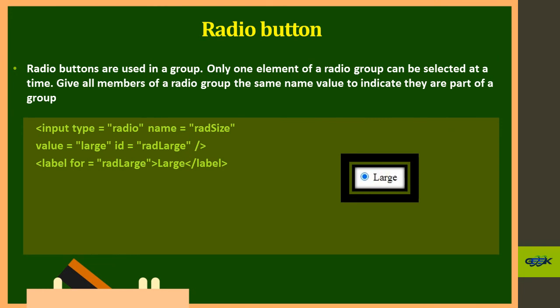For selecting one value from options, you use a radio button — the input type is set to 'radio'. Related attributes include name (to group radio buttons), id (to access the specific element), and value (the data sent when selected).